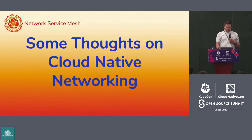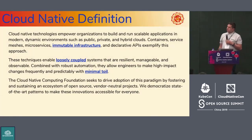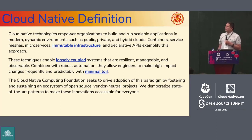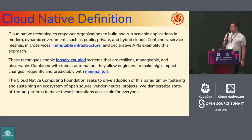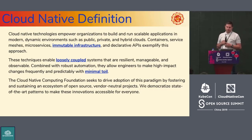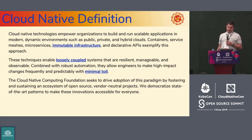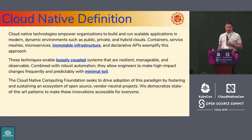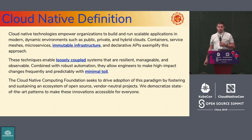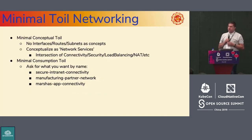This is the cloud native definition as defined by CNCF — you probably saw it at Dan's keynote today. It's pretty long; no point reading all of it, but it's very well written so please check it out if you haven't already. We've outlined a couple of points we think are very important for networking done in the cloud native way: immutable infrastructure, loosely coupled systems, and minimal toil.